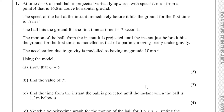Question number 1. The motion of the ball from the instant it is projected until the instant just before it hits the ground for the first time is modelled as that of a particle moving freely under gravity. The acceleration due to gravity is modelled as having magnitude 10 metres per second squared. Using the model for part A, we have to show that U equals 5, and at this point I think it will be useful to draw a diagram.